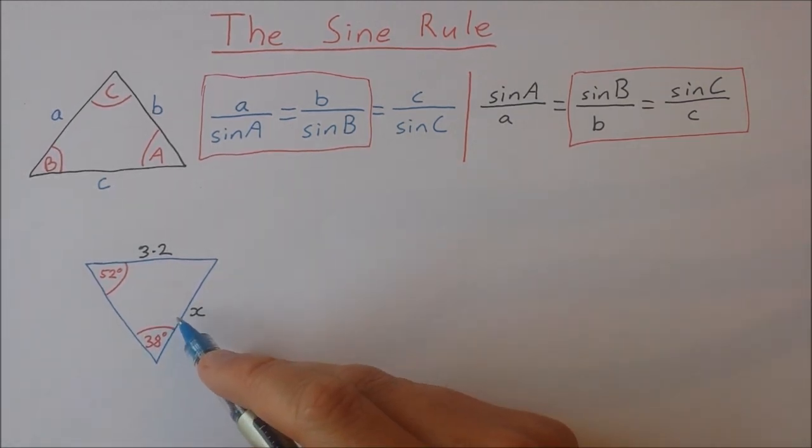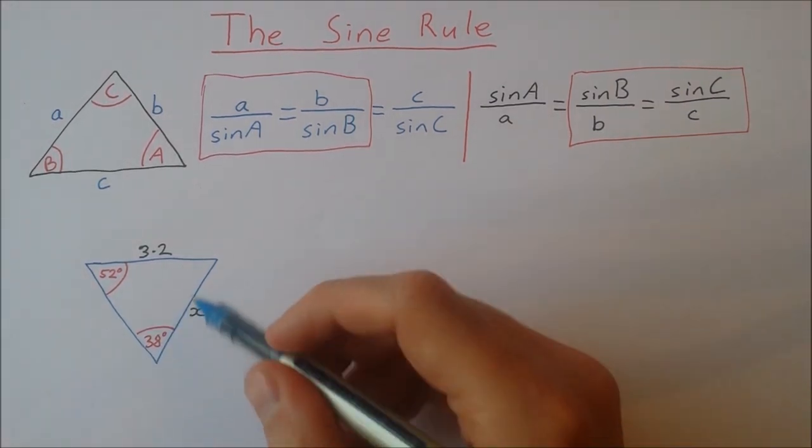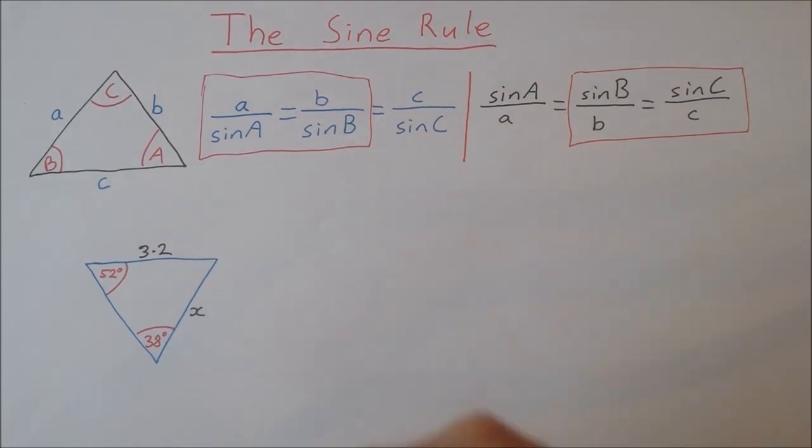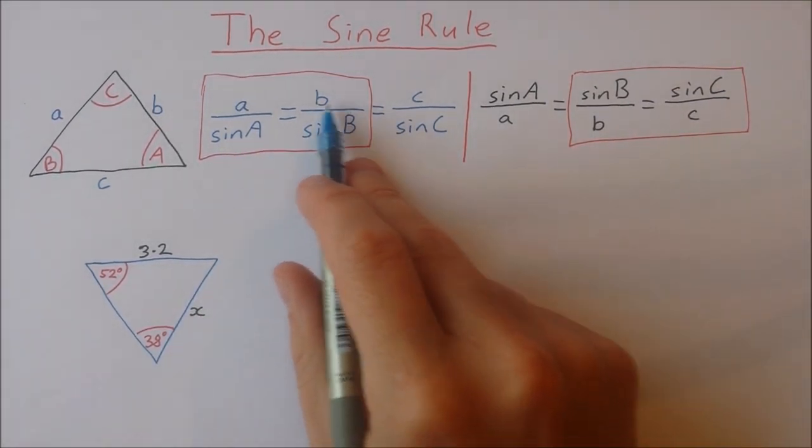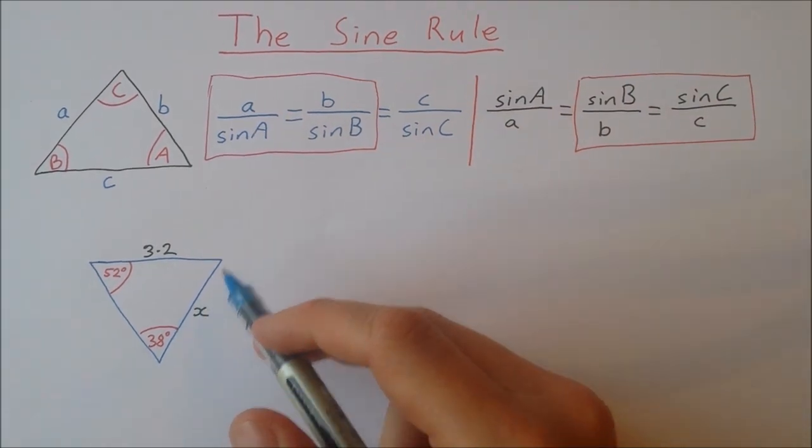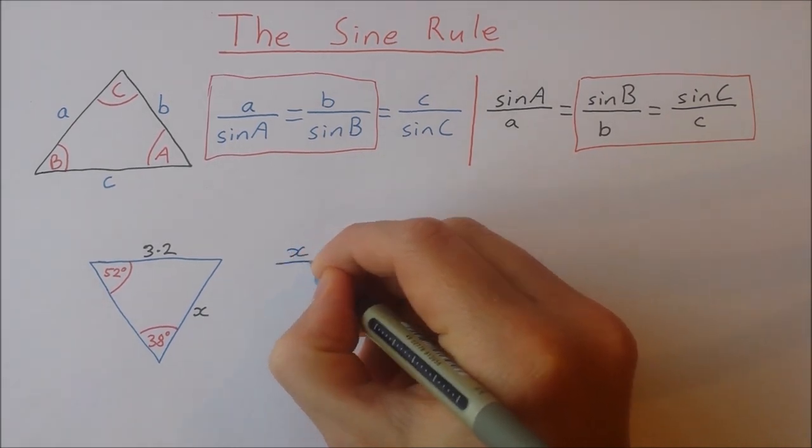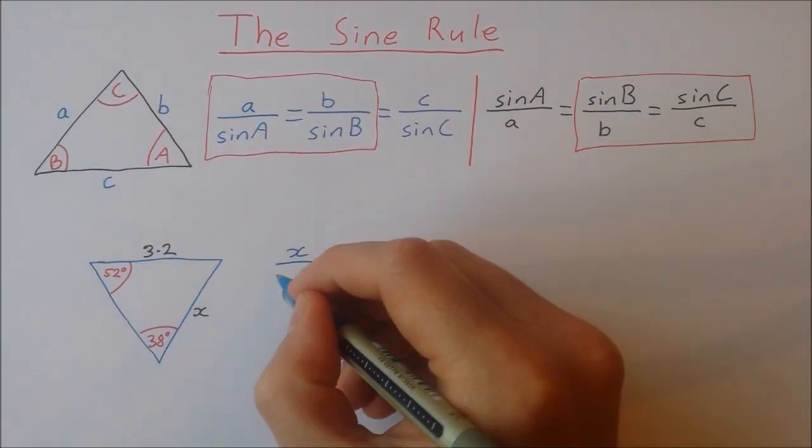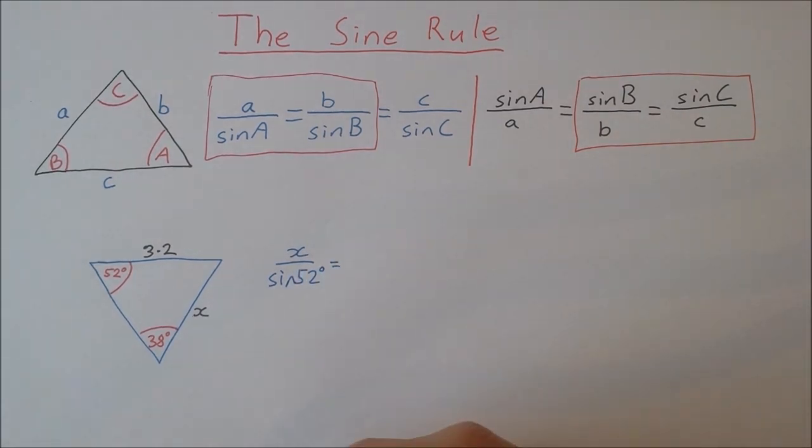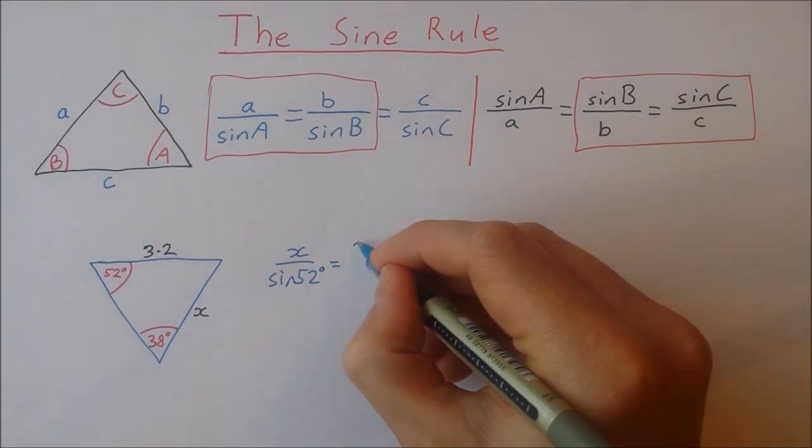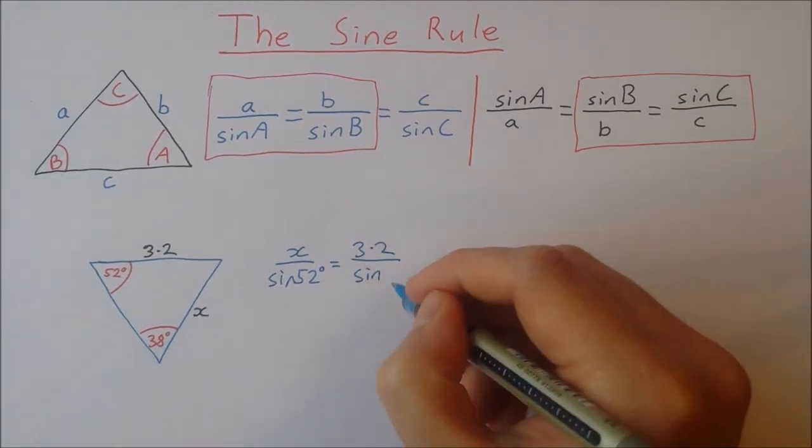Okay so we'll start with this one here. I have the side x is opposite 52 degrees. I have the side 3.2 is opposite 38 degrees. So we're going to use this form here. I always like to put my unknown on the top on the left. So I'm going to put x over the sine of 52 is equal to 3.2 over the sine of 38.